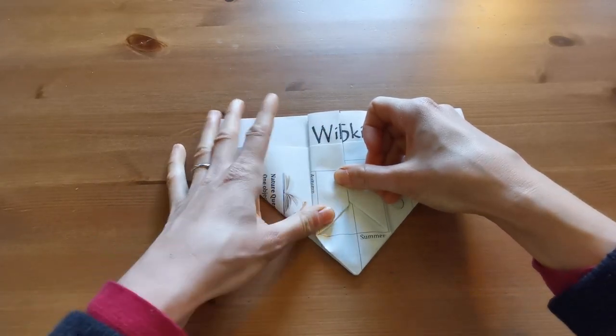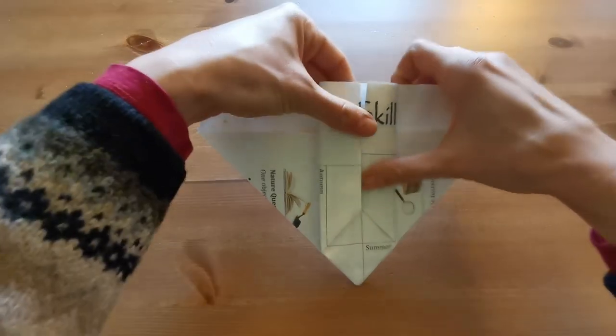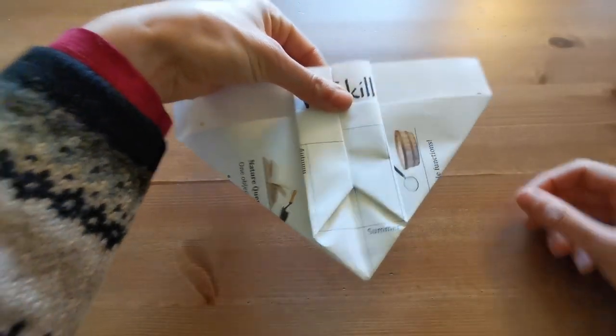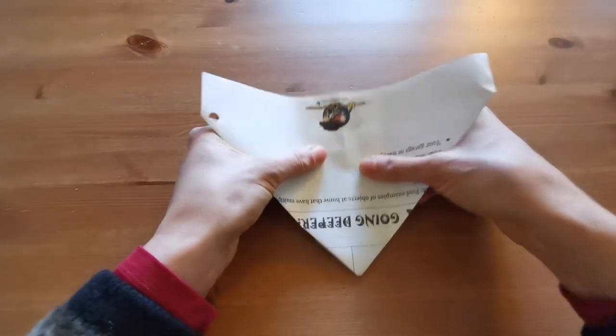Again, press all your edges, and there you have it, one side of your pot is now finished. Take a look, and now let's turn it over and repeat all the same steps to complete the other side.